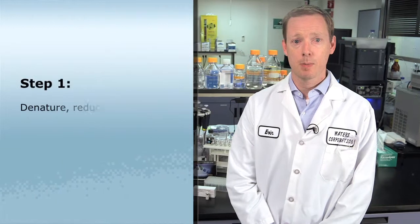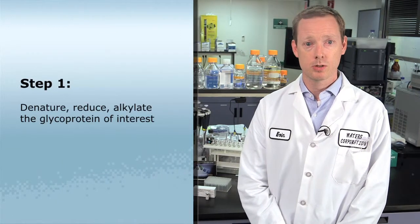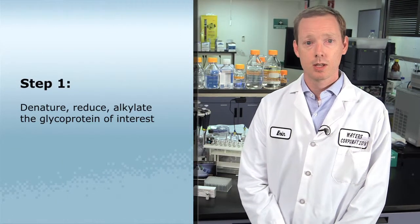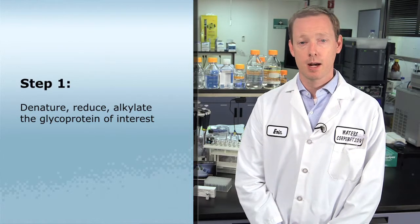Paramount to accurate and informative glycan data is the quality of the labelling starting material. Truly, all downstream steps — separation, processing, and reporting — rely on the performance of the sample preparation. The procedure for preparing N-linked glycans for analysis can be complicated and variable. GlycoWorks helps ease the process of preparing derivatized N-linked glycans by bringing together many of the needed consumables and establishing a standardized approach. The first step in glycan sample prep is to denature, reduce, and alkylate the glycoprotein of interest, so that it is made susceptible to enzymatic processing.